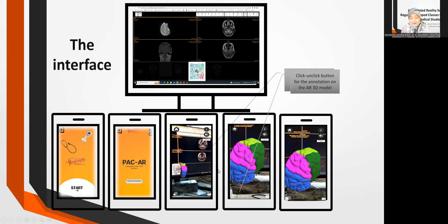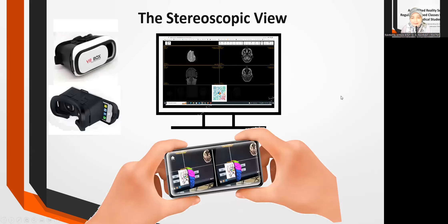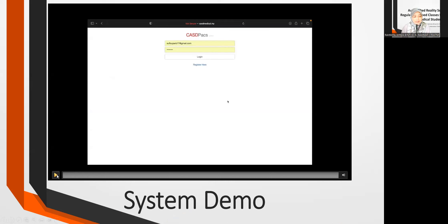This is the mobile phone interface: you start and begin scanning. Once the mobile phone scans the marker, the 3D model pops up and you can jot down on the brain. We also created a stereoscopic view feature, where the student can choose this function and slip their mobile phone into a VR box. They can then wear it and see the brain in front of their eyes, exploring the 3D models using eye gaze to better understand the inner parts.